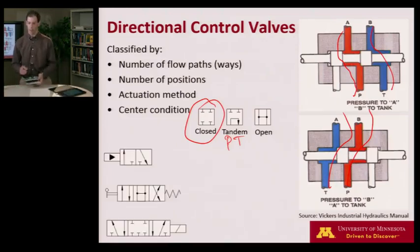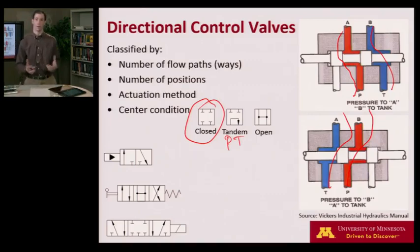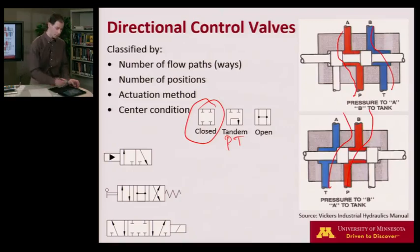I've got three example valves down here. Let me quickly explain how we take these schematics and describe the valve. This first valve would be referred to by its number of flow paths. In this case we have three different flow paths, so this is a three-way valve. I have two shiftable positions, so this is a three-way, two-position valve.